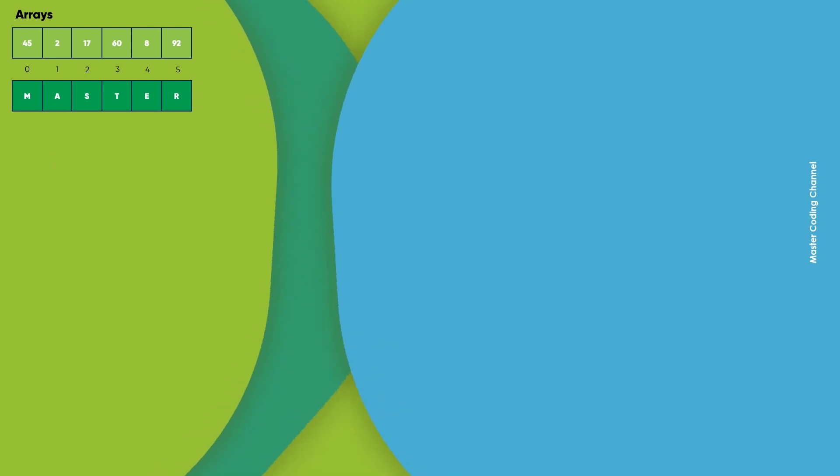Arrays are indexed, meaning that random access is possible. The array operations that we are going to learn include traverse, going through the elements and printing them.